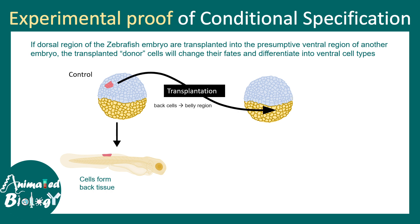Scientists created a transplantation experiment where they took a cell from the back and placed it in the belly region, then asked: do these cells retain the fate of back cells or do they eventually become belly cells? The answer is they eventually become belly-like tissue — they no longer retain the fate they were originally supposed to give rise to, and the belly cells influenced the fate of the transplanted cells.